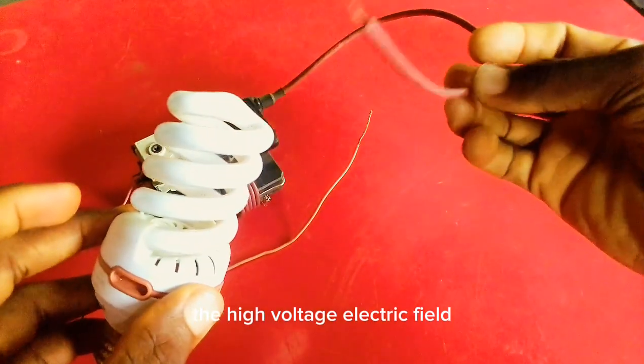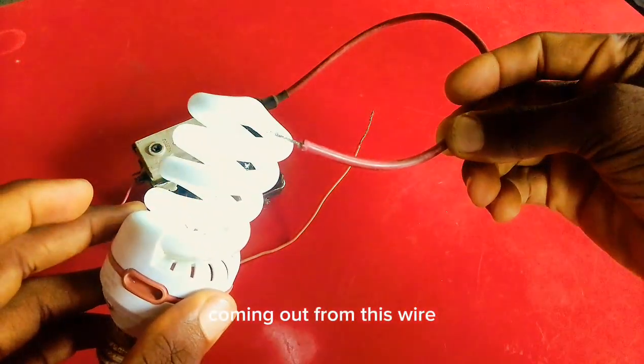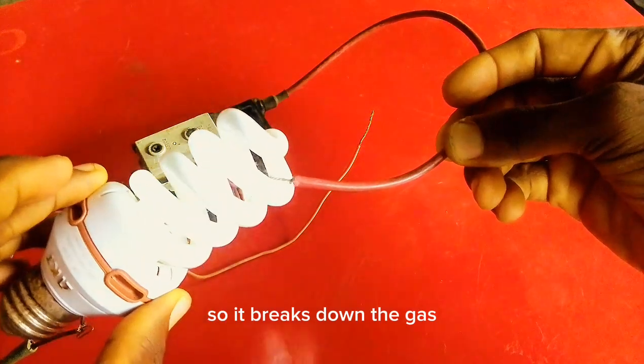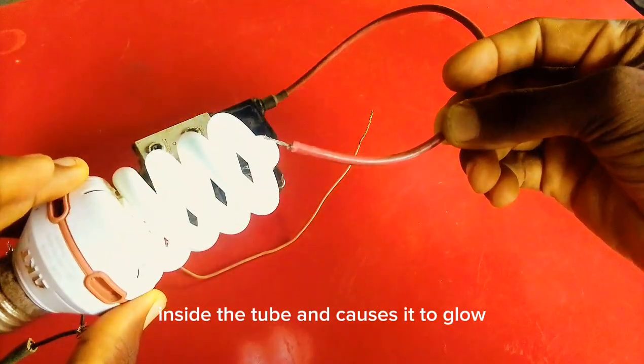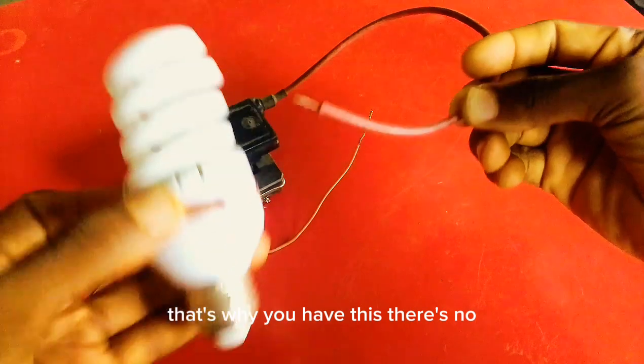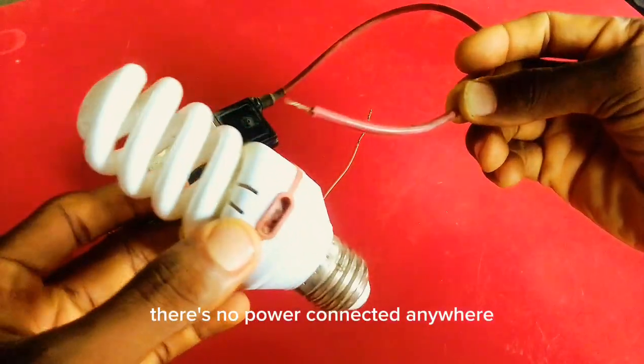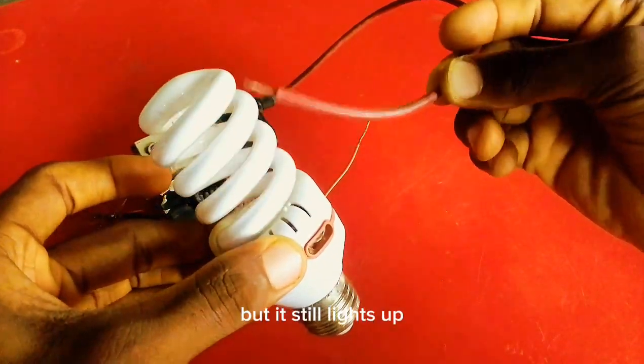Now this is as a result of the high voltage electric field coming out from this wire. So it breaks down the gas inside the tube and causes it to glow. That's why you have this. There's no power connected anywhere, but it still lights up.